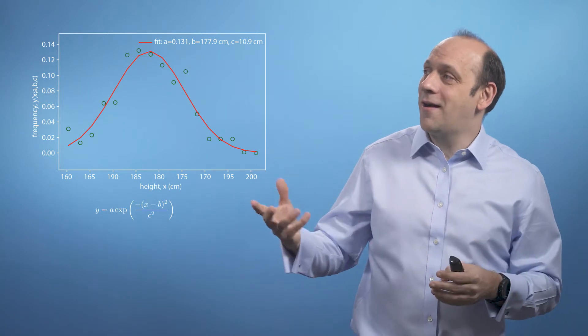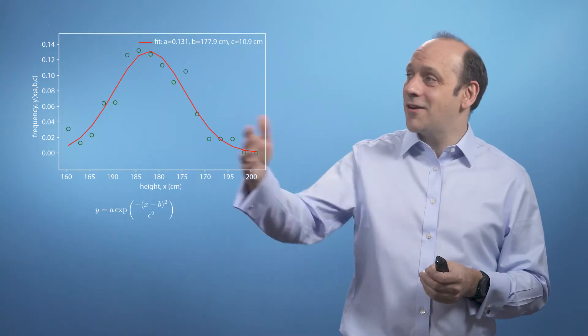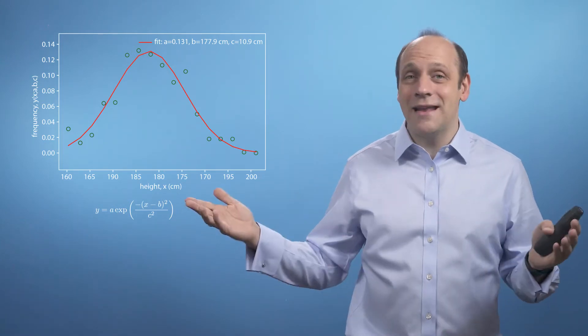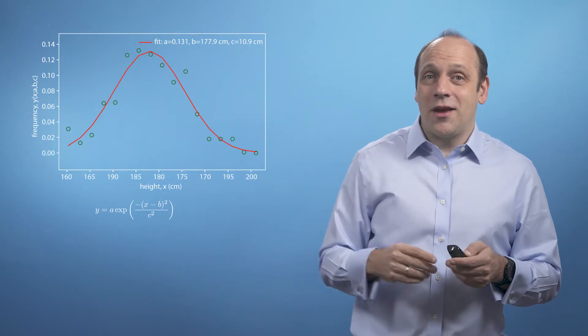And what you'll find is that the mean height b here is about 178 centimeters and the characteristic width of this distribution is about 11 centimeters. That's parameter c in the equation here.